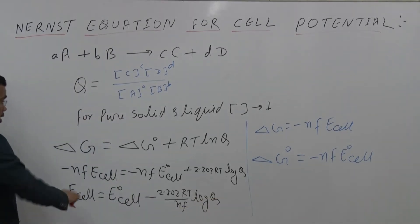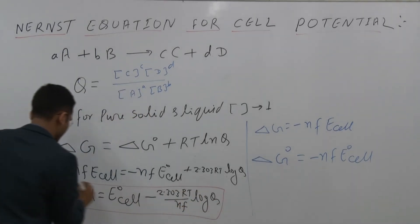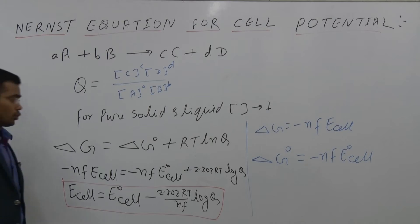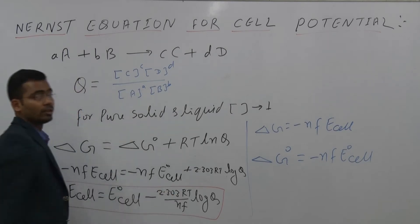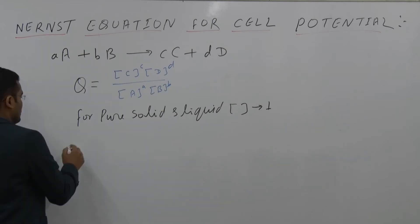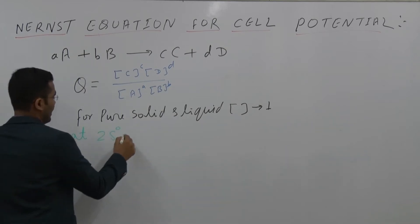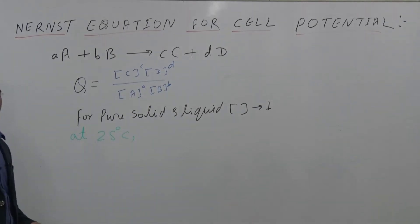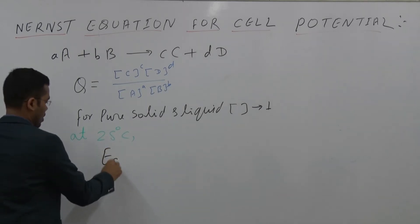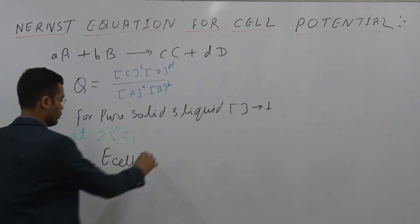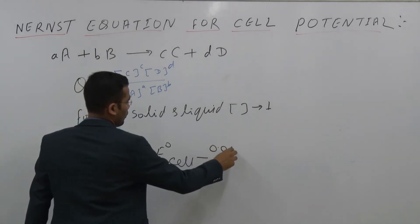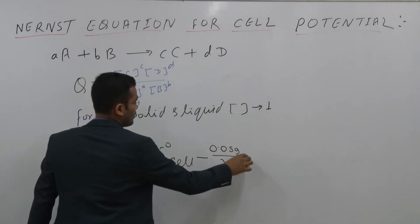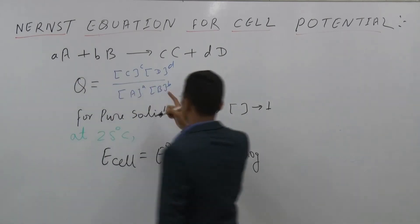This is the Nernst equation. We use 2.303 because when we convert natural log (ln) into log base 10, we multiply by 2.303. At 25 degrees Celsius, E_cell = E°_cell − (0.059 / n) log Q.